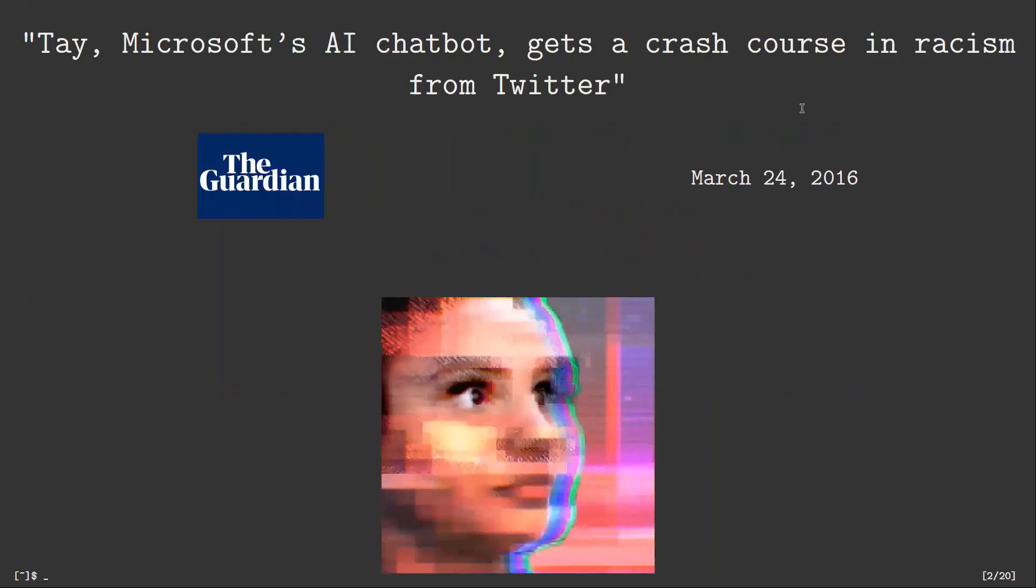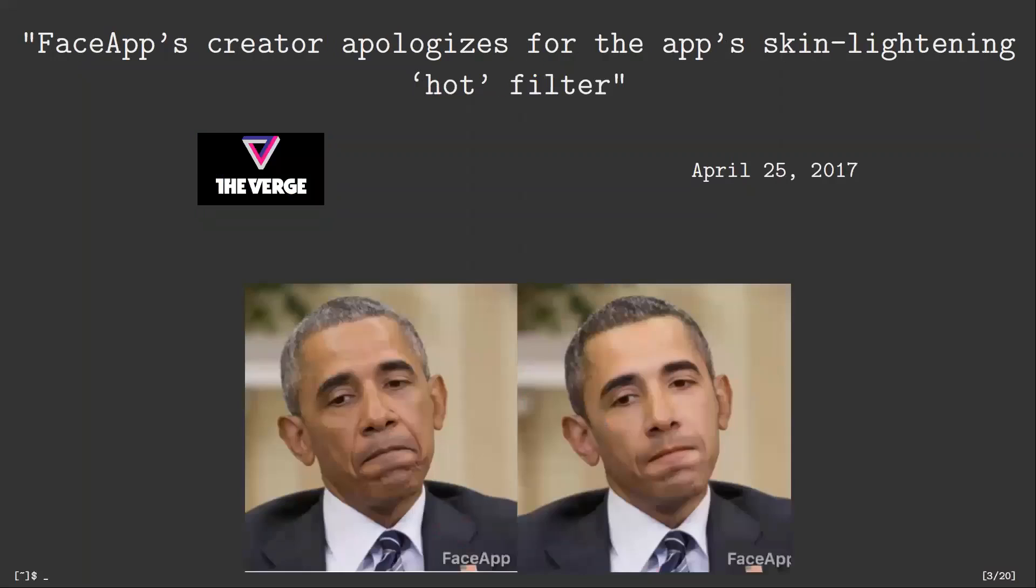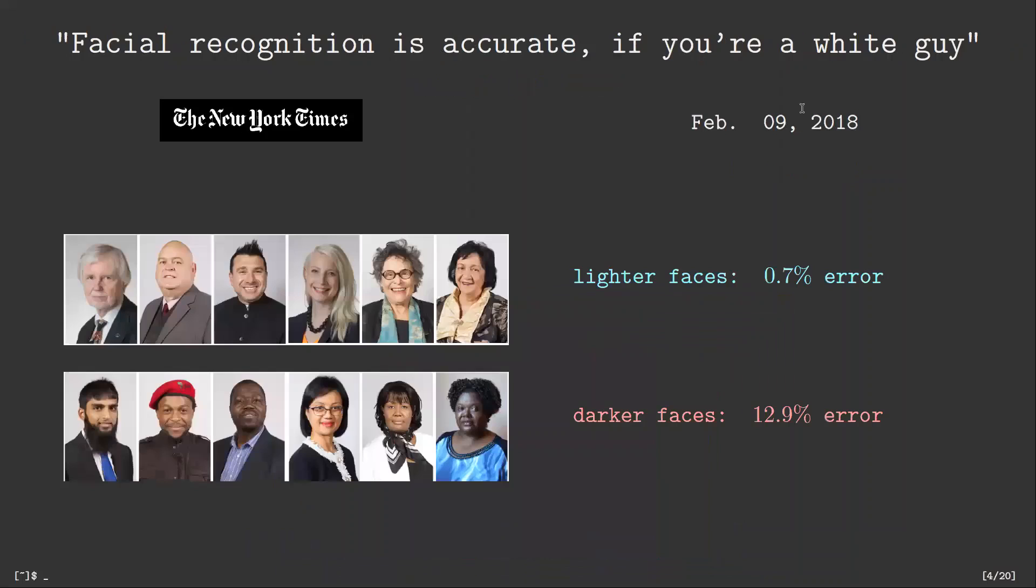Our work is motivated by many recent examples of fairness and privacy issues in machine learning systems. In March 2014, The Guardian reported that Microsoft's AI chatbot got a crash course in racism from Twitter. In April 2017, FaceApp's creator apologized for the skin lightening filter deployed in the app. In February 2018, The New York Times pointed out that facial recognition systems are more accurate for white males. These examples clearly demonstrate the necessity of privacy and fairness consideration in machine learning and particularly in representation learning.